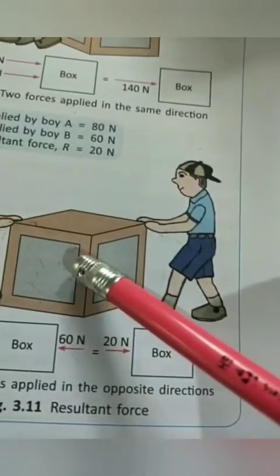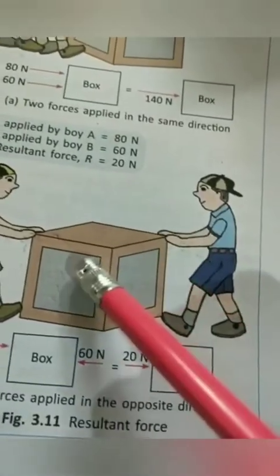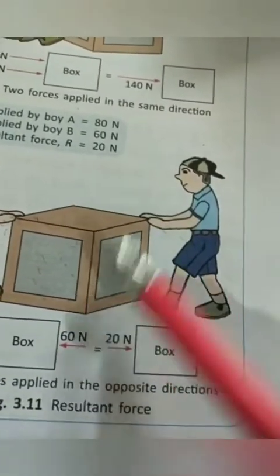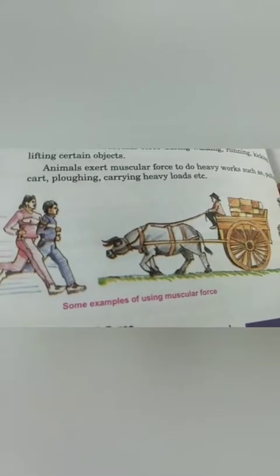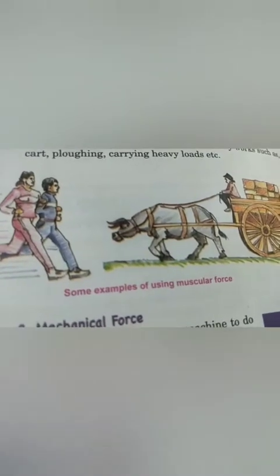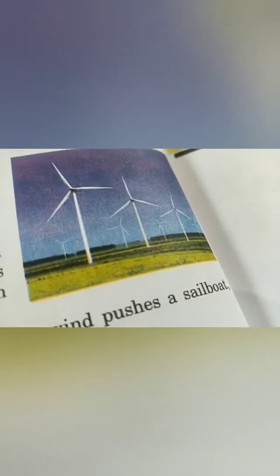When a boy applies force on a box directly, it is a contact force — specifically muscular force. Examples of muscular force include people pulling a rope, a boy lifting a heavy box, a person walking on a road, a horse or bullock pulling a cart. Another contact force is mechanical force, as seen when wind pushes a sailboat or a windmill.